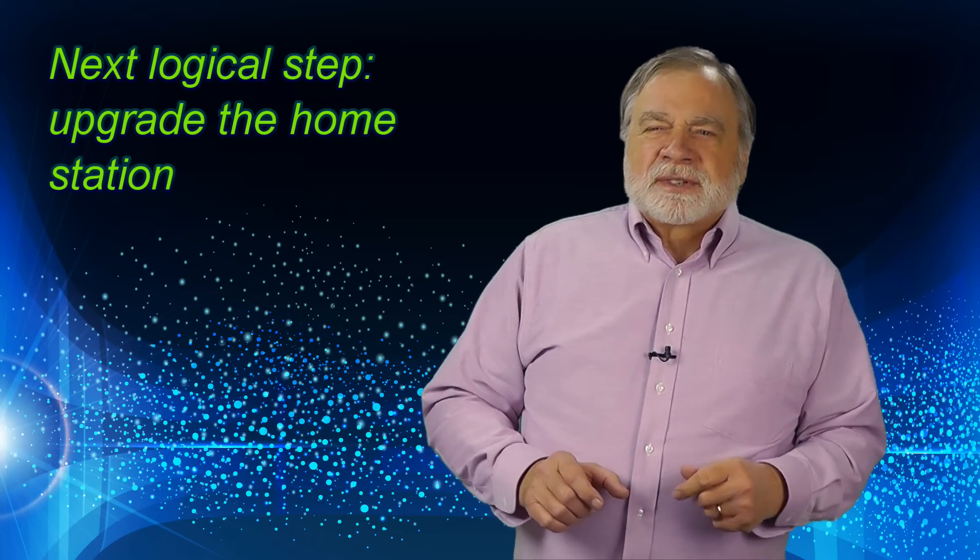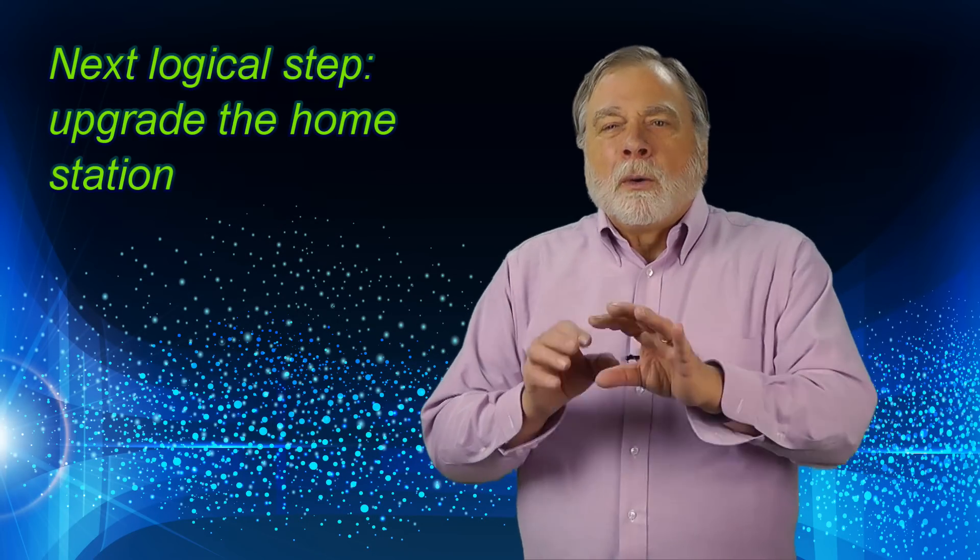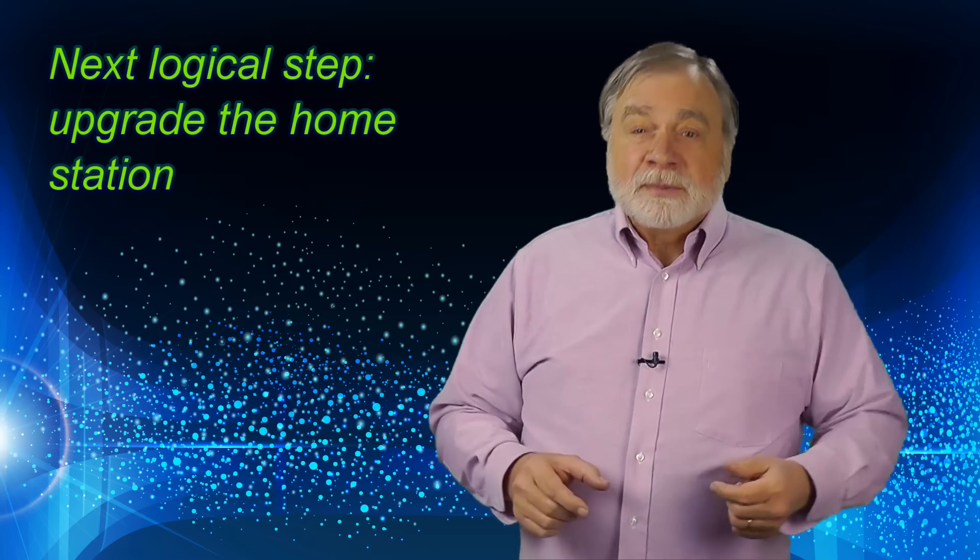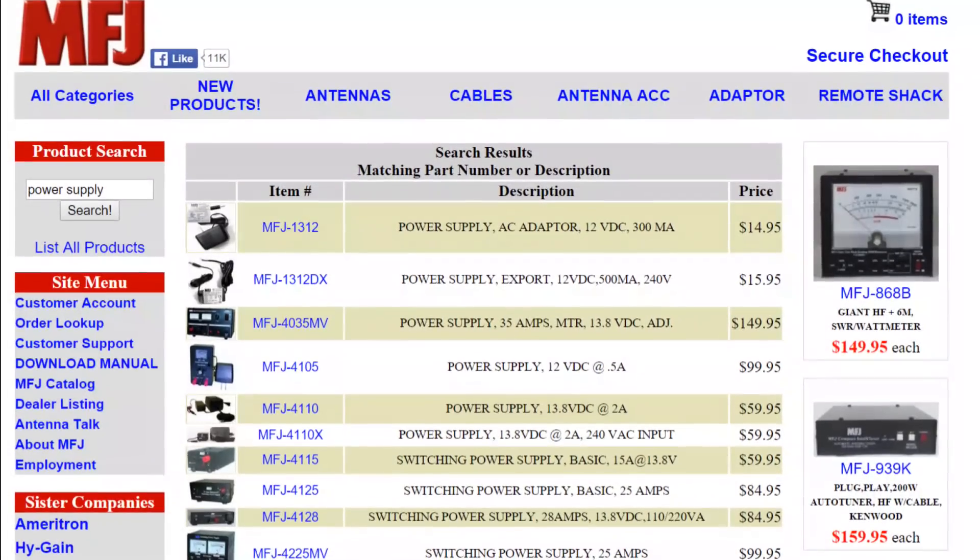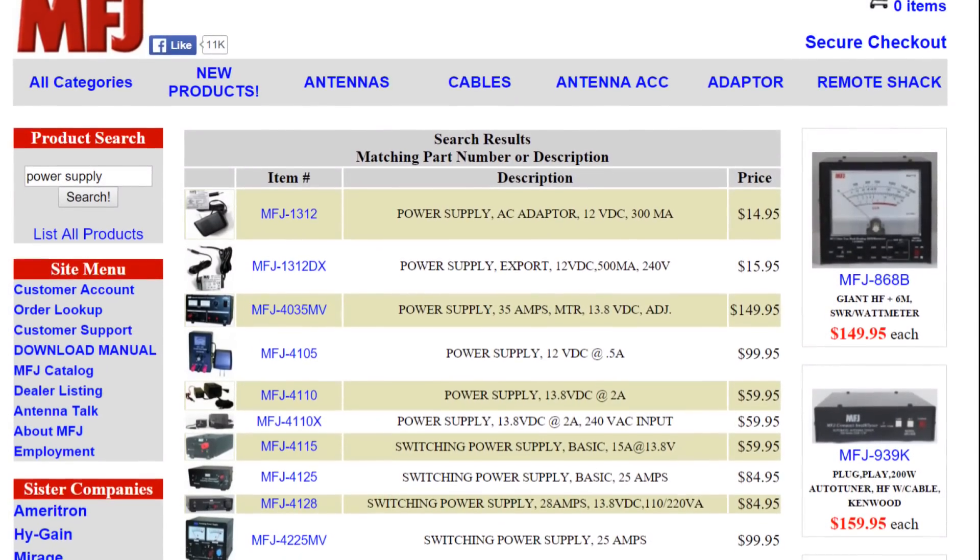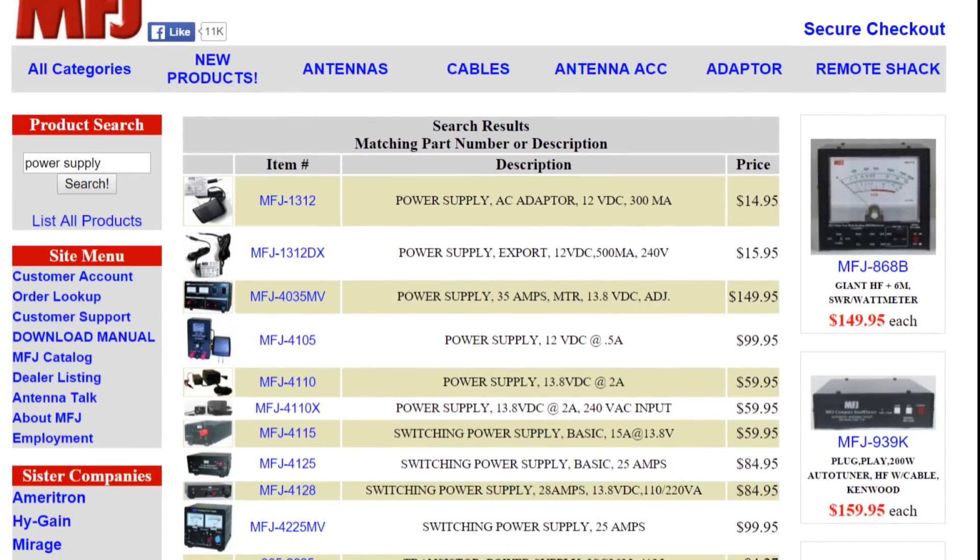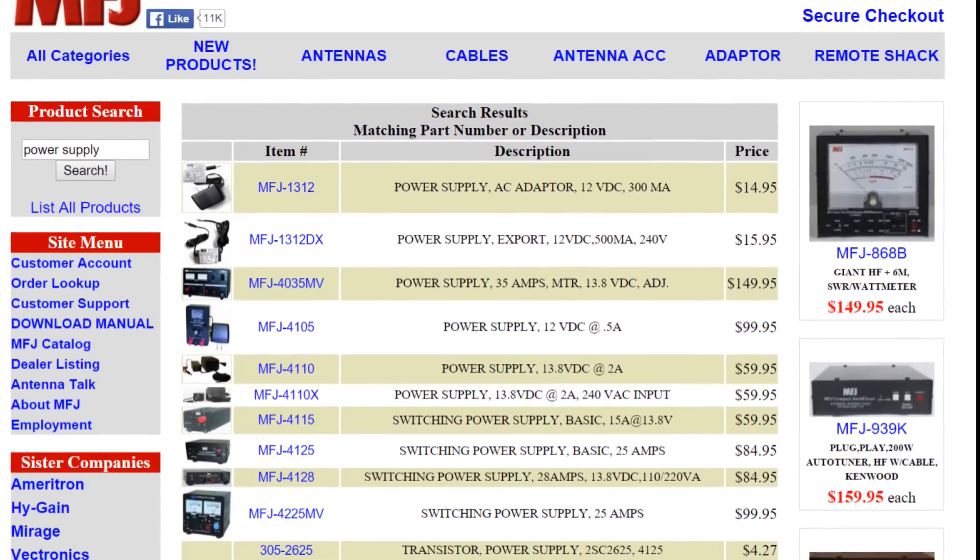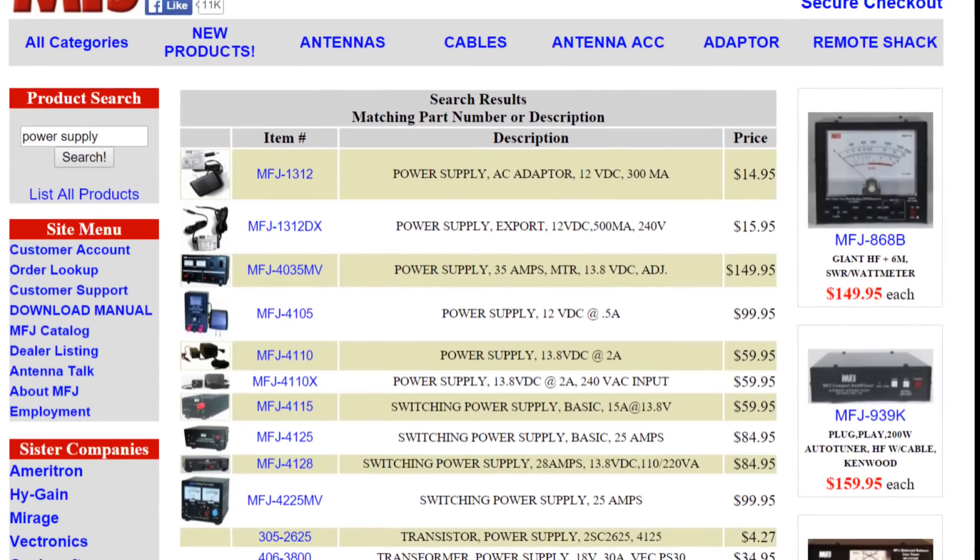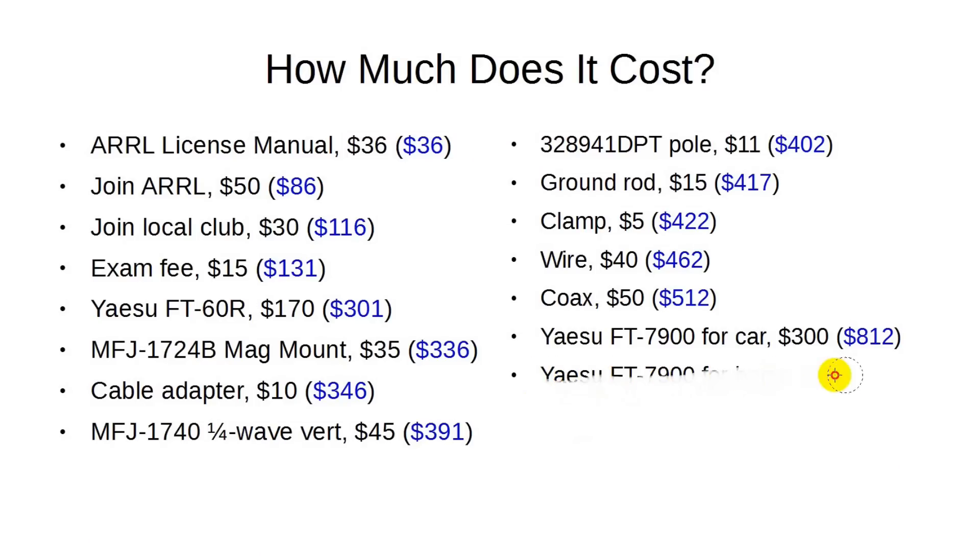But there is another logical step. You can use that same model mobile rig or one similar to it in your home station. Now, you'll need a 13.8 volt power supply. MFJ has a number of options and for, oh, let's put aside $120, you can have a nice one that will also serve well for your HF station after you get your general license. So what are we up to now? In the neighborhood of $1,200. Many techs stop right here with a mobile rig in the car and in the home.